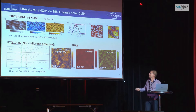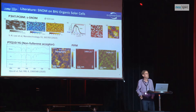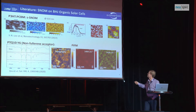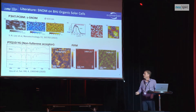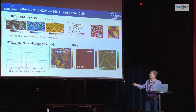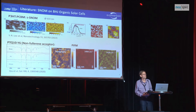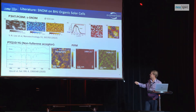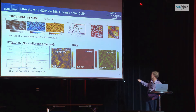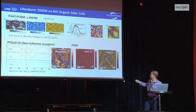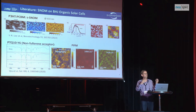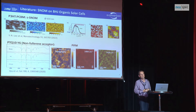In the literature there are plenty of reports on fullerene-containing samples where people succeeded in using scattering SNOM to identify domains in films containing either the donor or the acceptor. There are also some results on non-fullerene acceptors using photo-induced force microscopy, where people probed the absorption at the peak of the Y6 acceptor versus the polymer contribution. The red peak is the polymer, the green peak is from the acceptor — the small molecule — and there is some spatial contrast, but it's not really complementary in terms of having distinct areas where you either have the donor or the acceptor.